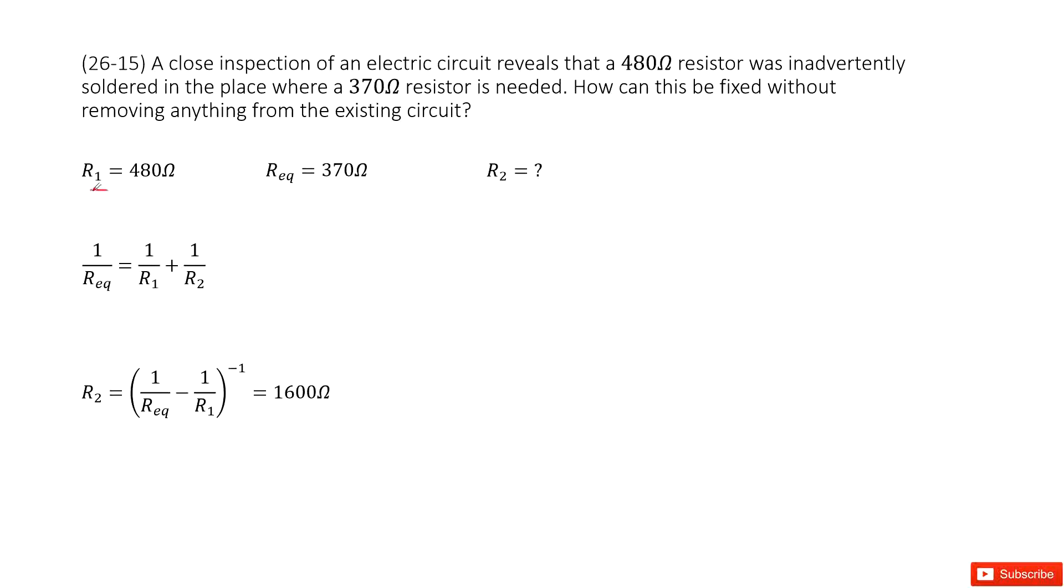We have R1 = 480Ω. And then we want it to finally become 370Ω. You can see R1 is larger than R_equivalent, 370Ω.